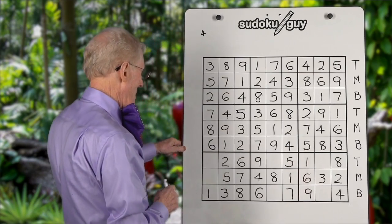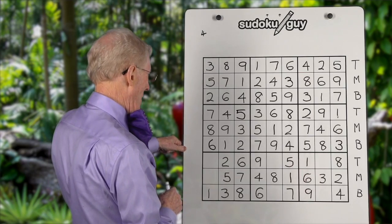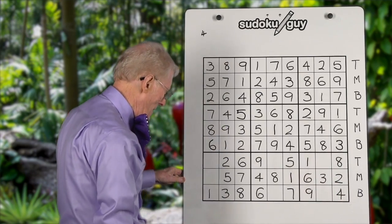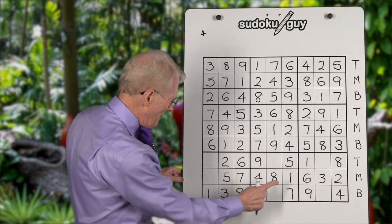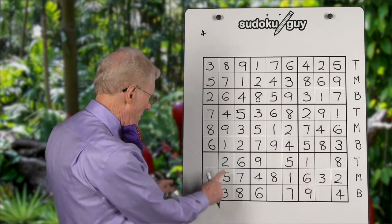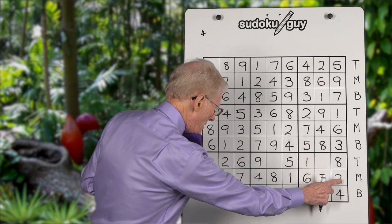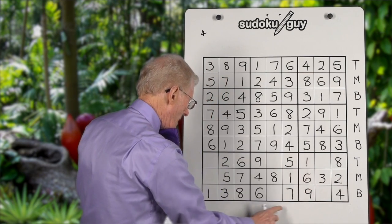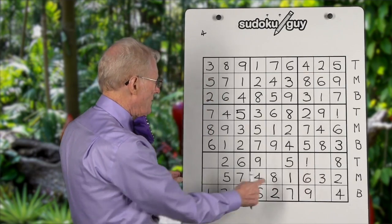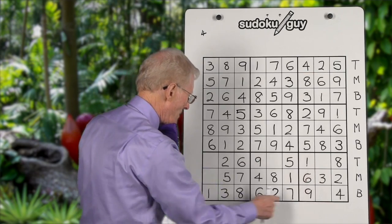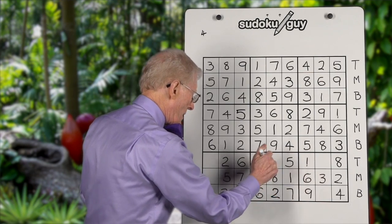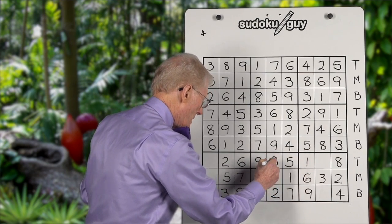Let's see if there's something else we're missing so far. I think we've got all these. Now let's do TMB along here: we have a bottom, we have a middle, and we have a top — they're all there. Go to number two: we have a top, we have a middle, and in this block that doesn't have a two, it has to be in the bottom. We've got a column with an empty cell and a block with an empty cell — one, two, and it's a three. Let's put the three in.